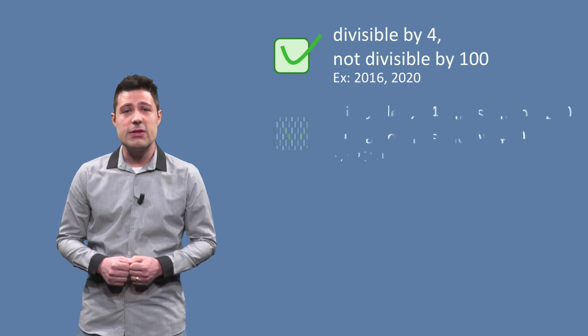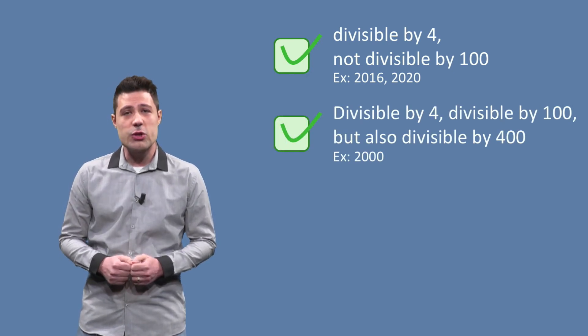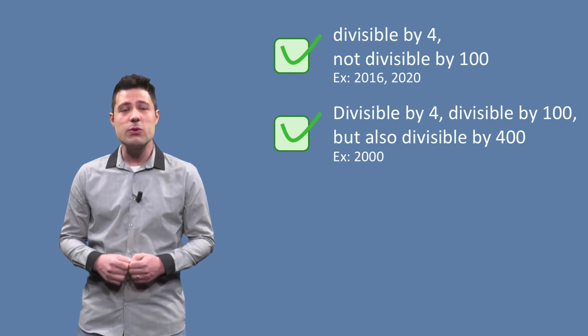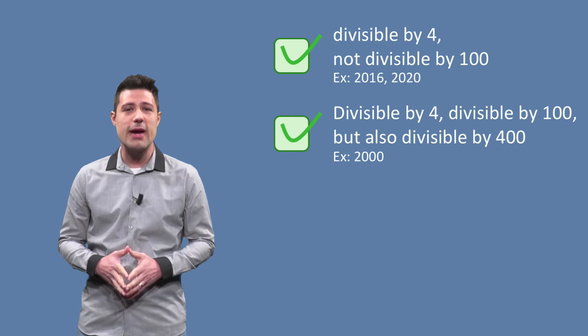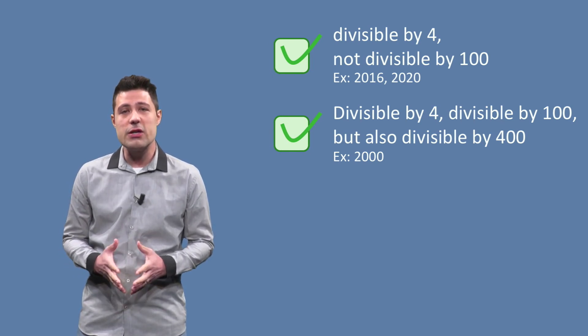Another partition is years divisible by 4 and divisible by 100, which would make this year a non-leap year, but it is also divisible by 400, and then it turns back into a leap year. A concrete example is the year 2000.